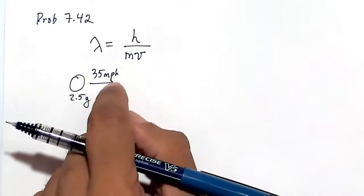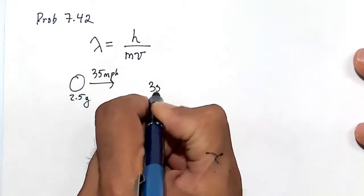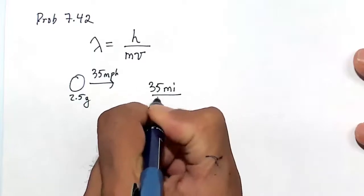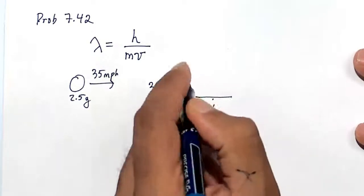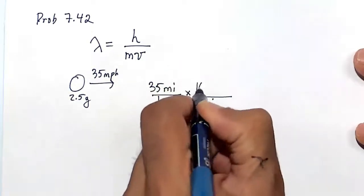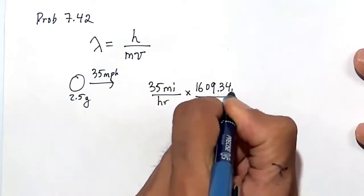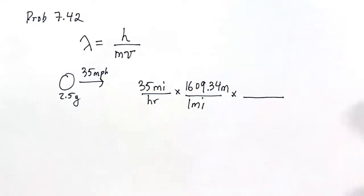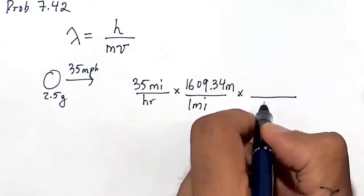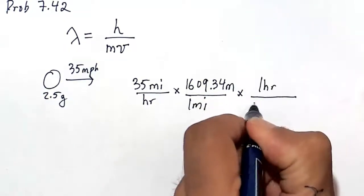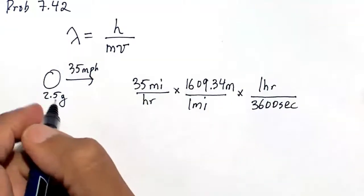The first thing we need to do is convert the miles per hour to meters per second, our customary units. So 35 miles per hour times—I looked this up—the conversion factor from miles to meters: one mile is 1,609.34 meters. And we want it in meters per second, so one hour is about 3,600 seconds.